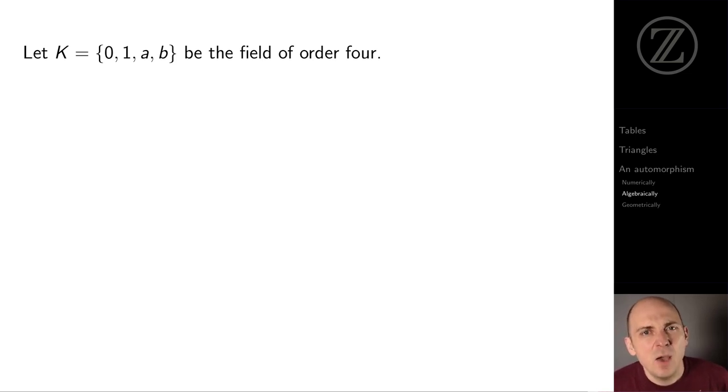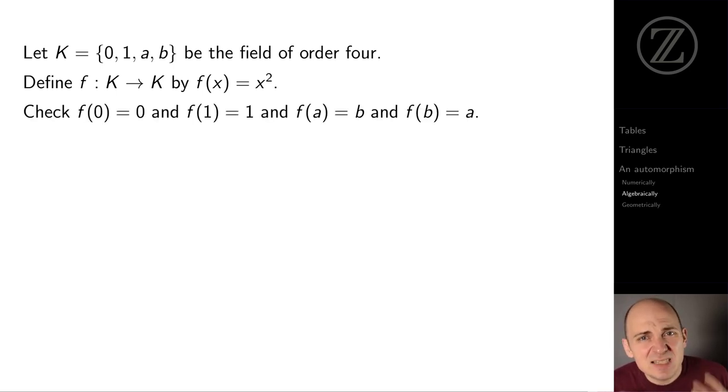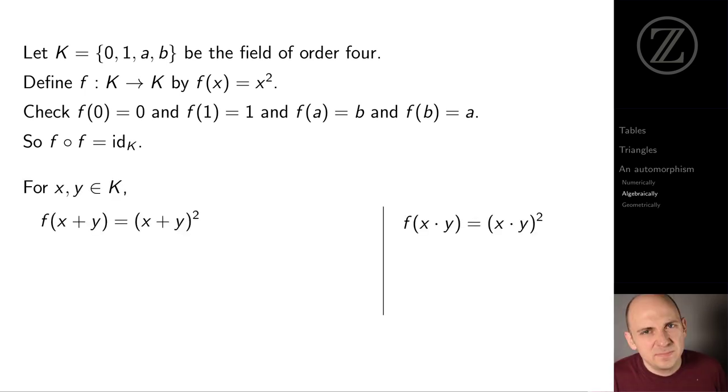Let K be the field of order four. We'll give a name to the automorphism that we're considering. F is the function from K to K, which sends an element x in K to x squared. This is the same as the swap A and B operation from before. I mean, recall that A squared equals B and B squared equals A. Swapping A and B and then doing that swap again is effectively doing nothing. So F composed with F is the identity.